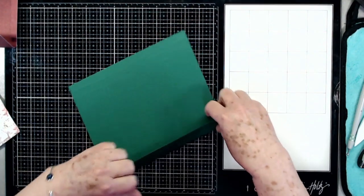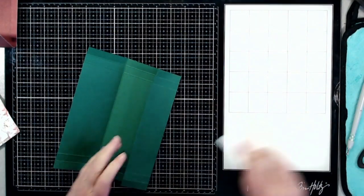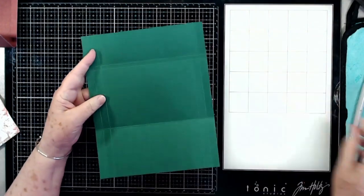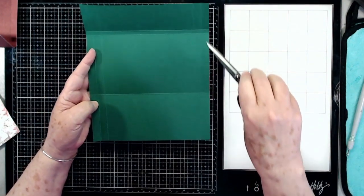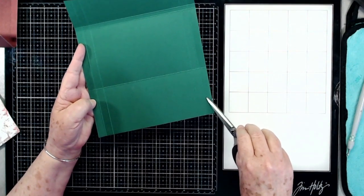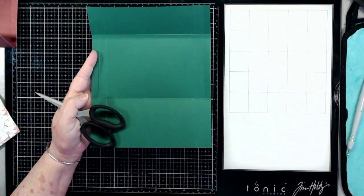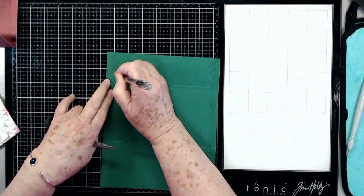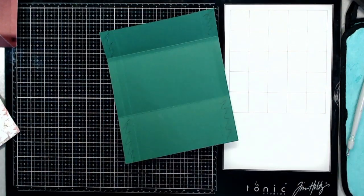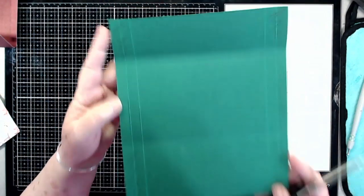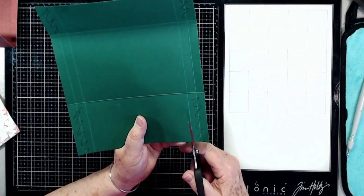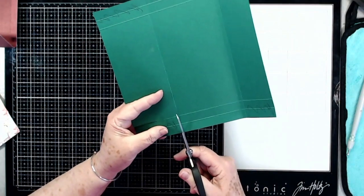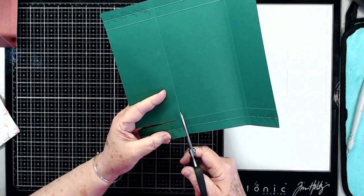Then we're going to go ahead and fold and burnish this. Once you have it folded and burnished, on these four corners you're going to cut away both of these score lines. I always cut on the inside of the score line when I'm cutting things like this - cutting the whole section away just makes sure for a nice clean edge.